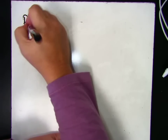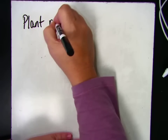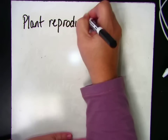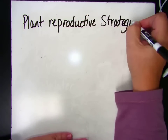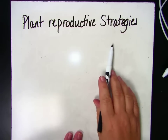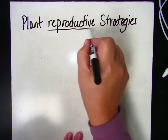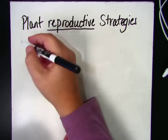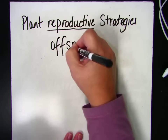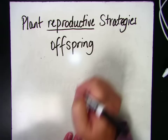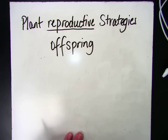Now we're going to talk about plant reproductive strategies. These are just ways that plants have adapted to make new plants, because when we reproduce something, we make a new one. And when we reproduce, the new one is called the offspring. A baby puppy is an offspring — actually, anything that is living is an offspring, because they've been produced from another organism of the same species.